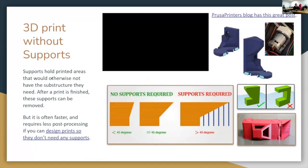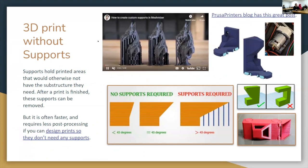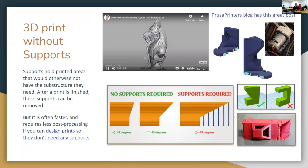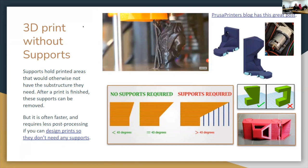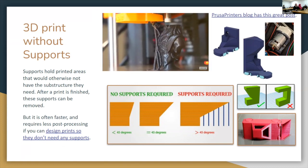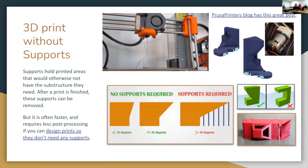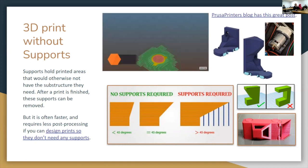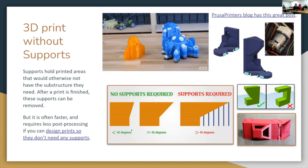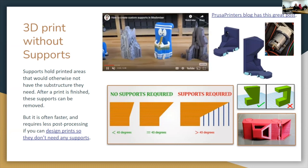As you get better at 3D printing and design, you can navigate how you want to generate supports. Tree supports are really neat — they minimize the amount of material and build in an interesting way that supports where needed and not where it isn't. If you print unsupported, that's what you get. Strategically, if you're less than 45 degrees in your overhang you don't need supports.